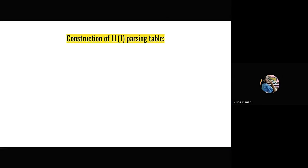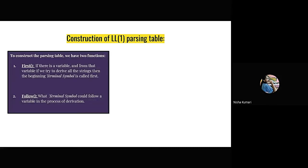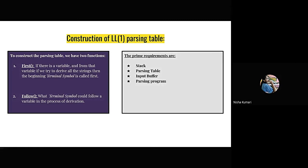For LL1 parsing, we need to create an LL1 parsing table. We are going to see the important functions required to create the LL1 parsing table. To construct the parsing table, we have two functions: First and Follow. In the First function, if there is a variable and from that variable we try to derive all strings, the beginning terminal symbol is called First. In the Follow function, we determine what terminal symbol could follow a variable in the process of derivation. The prime requirements for LL1 parsing are the stack, the parsing table, an input buffer, and the parsing program.